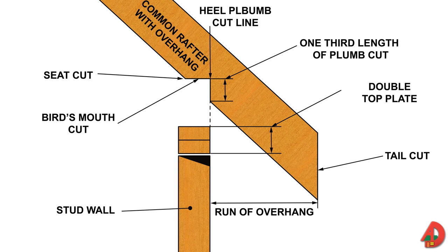Plumb cuts are made at the ridge, heel, and tail of a common rafter. A seat cut or level cut is made where the rafters rest on the top wall plates. The notched form created by the seat and heel plumb cut line is referred to as a bird's mouth. The length of the seat cut should be the same width as the wall plates, and the seat cut should not be deeper than one-third the length of a plumb cut. The length of the common rafters is based on the unit rise and total run of the roof.